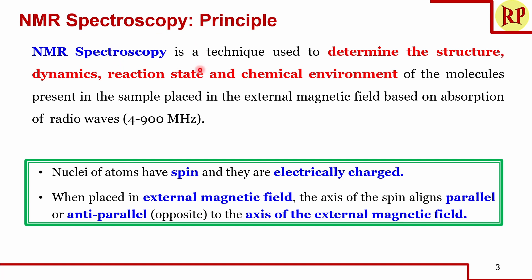First, let us understand the principle of NMR spectroscopy. NMR spectroscopy is a technique used to determine the structure, dynamics, reaction state, and chemical environment of the molecules present in the sample placed in an external magnetic field, based on the absorption of radio waves. When the sample is subjected to an external magnetic field and absorbs radio waves, we can determine the structure, dynamics, reaction state, and chemical environment of the molecules.